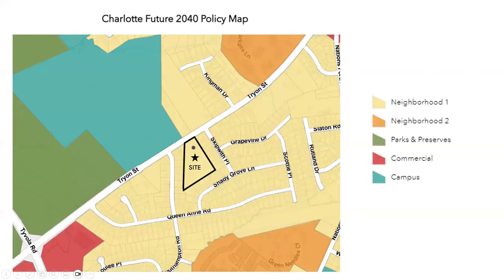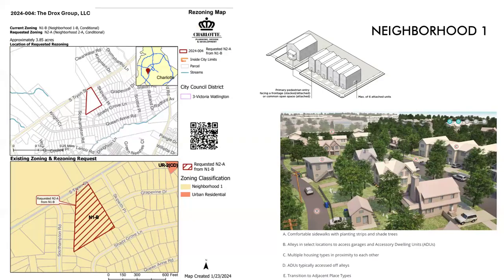Here's the Charlotte Future 2040 Policy Map. This site is currently identified as a neighborhood one place type. Hovering in the area you can also see neighborhood two, parks and preserves, commercial, and campus place types. A neighborhood one place type is identified as a transitional zone — it promotes pedestrian-friendly activity with sidewalks and a variety of housing types, including single-family homes, duplexes, triplexes, accessory dwelling units, and pedestrian-friendly sidewalks throughout.